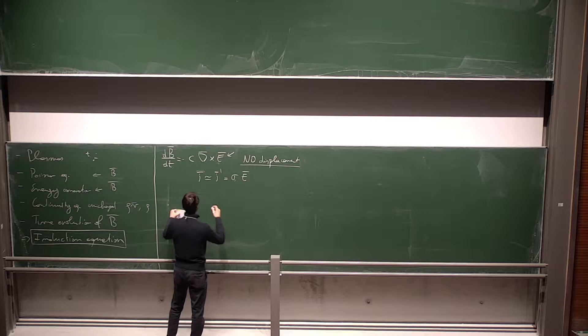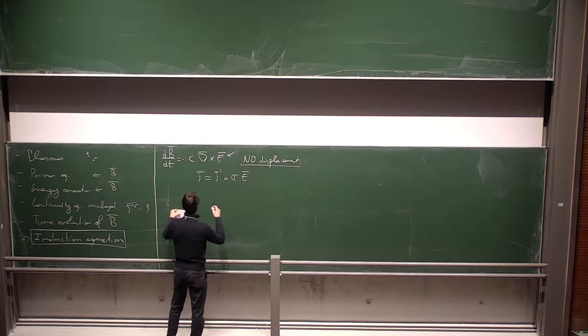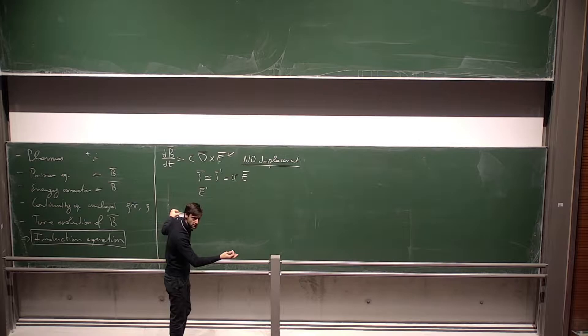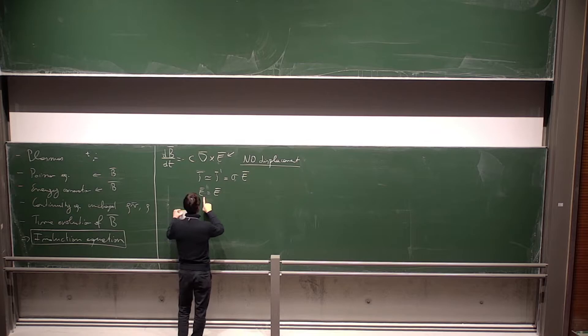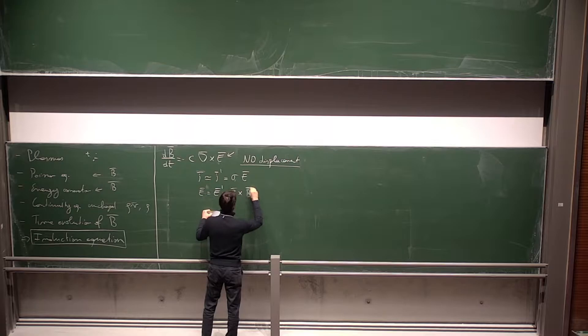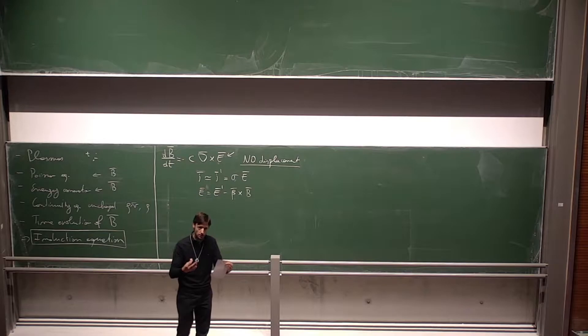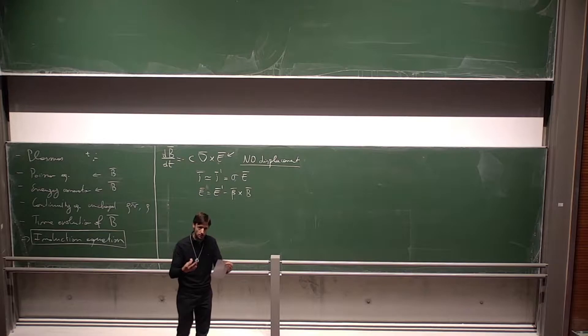Even for a non-relativistic fluid, the Lorentz transformation must be accounted for, because the electromagnetic field is one object living in Minkowski space, and a transformation mixes the electric and magnetic fields. Therefore the electric field we perceive is related to the electric field at rest with respect to the plasma, plus a term (v/c)×B, where v is the fluid velocity.